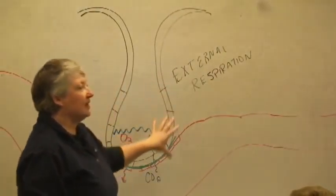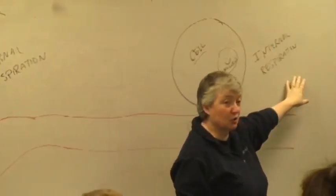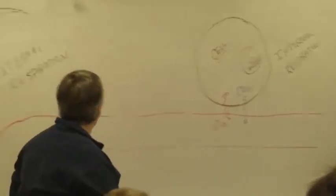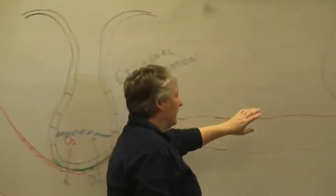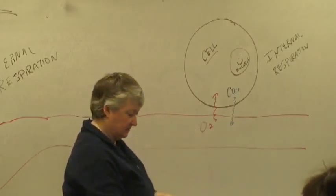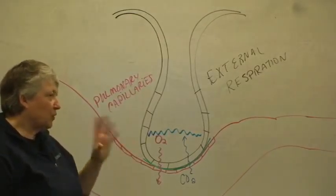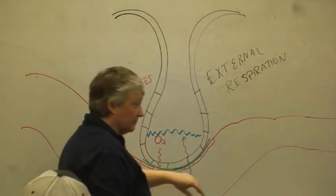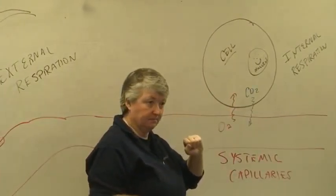One of the most important things to understand from today is the difference between external respiration and internal respiration. External respiration happens at the pulmonary capillaries. Internal respiration happens at all the other capillaries, the systemic capillaries. So when you're reading test questions or reading the textbook, think about where you are in the body. Am I talking about what's going on with the lungs? Because at the lungs, oxygen goes into the bloodstream. I'm talking about everywhere else, oxygen is leaving the bloodstream.